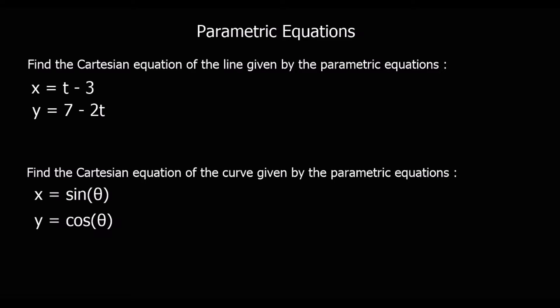Now we're going to look at converting from parametric equations to Cartesian equations. Parametric equations have two separate equations — one for x and one for y — whereas Cartesian equations have x and y linked in one equation. So we need to eliminate the parameter, eliminate t.